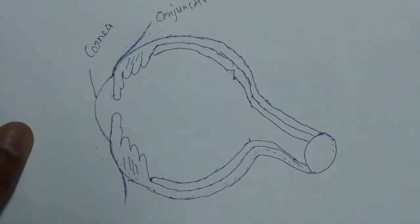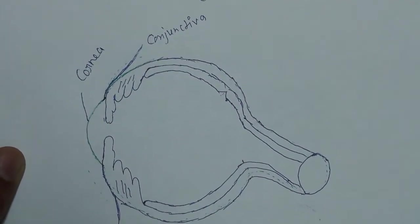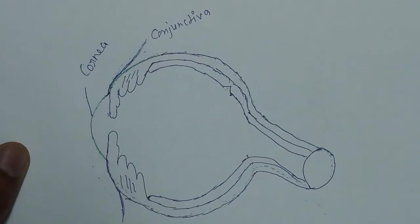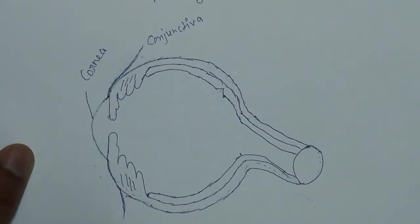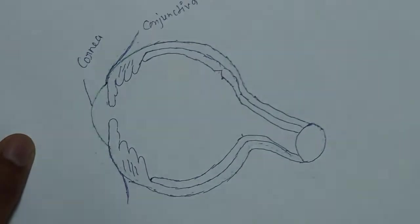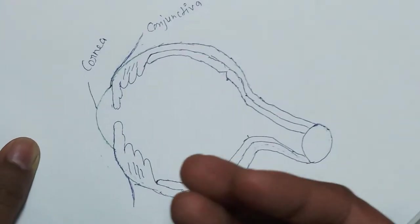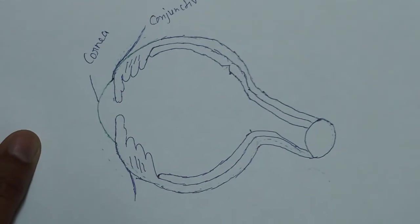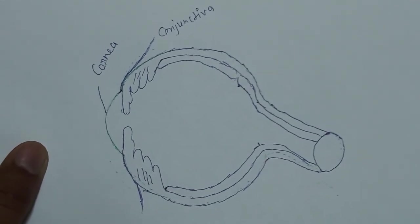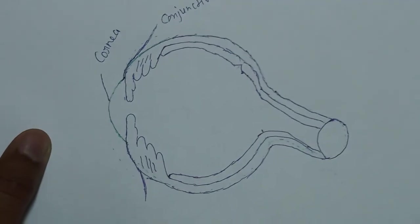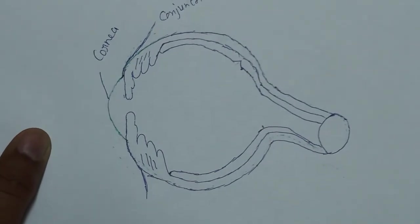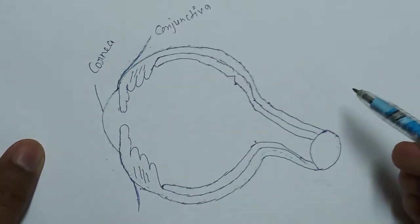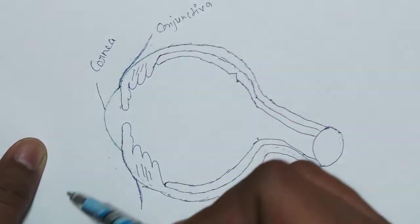The cornea is divided into five layers in previous books, but according to the latest information, it has six layers. First layer: epithelium. Second layer: Bowman's layer. Third layer: stroma. Fourth layer: Descemet's layer. Fifth layer: Dua's membrane. And the sixth layer: endothelium. According to the latest information, the cornea is divided into six layers.